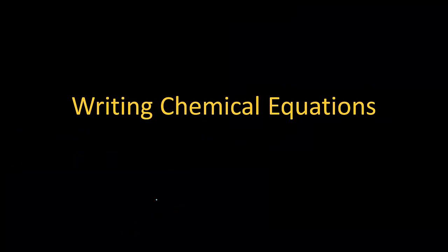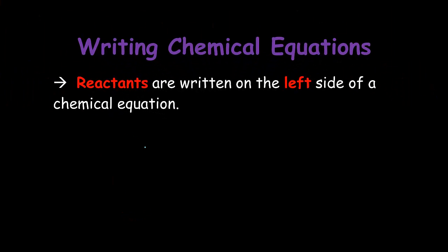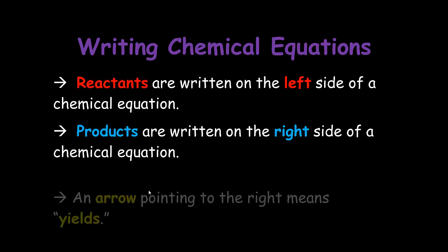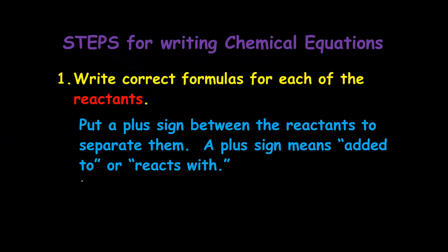Okay chemistry students, now we're going to talk about writing chemical equations. When you write chemical equations, you need to remember that the reactants are written on the left side of a chemical equation, products are written on the right side, and an arrow pointing to the right means yield.